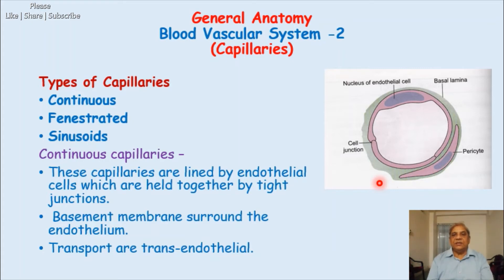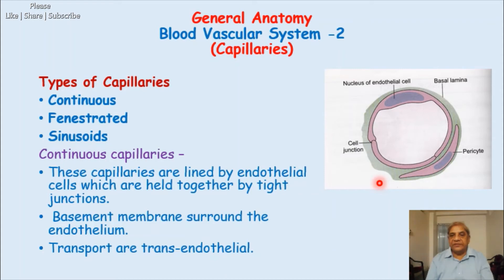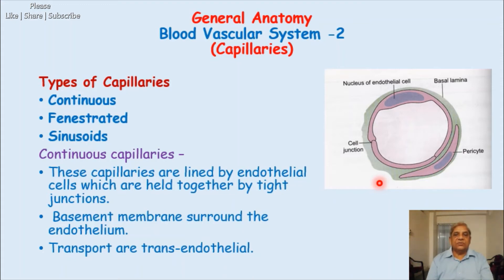Continuous capillaries are found in skeletal and smooth muscle, and in the brain — where they form part of the blood-brain barrier, which we will learn later. They are also seen in the skin, in the lungs, and in connective tissue. These are the main sites where continuous capillaries are found.